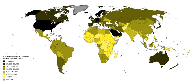The raw GDP figure is called the nominal, historical, or current GDP. When one compares GDP figures from one year to another, it is desirable to compensate for changes in the value of money — the effects of inflation or deflation. To make it more meaningful for year-to-year comparisons, it may be multiplied by the ratio between the value of money in the year the GDP was measured and the value of money in a base year.